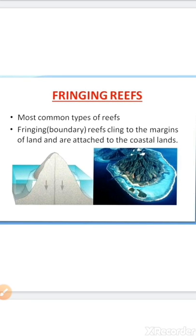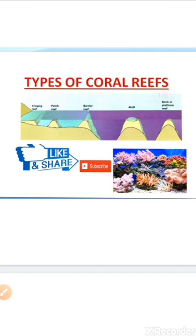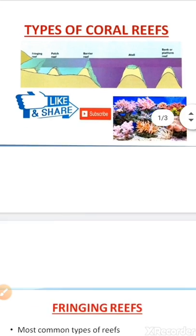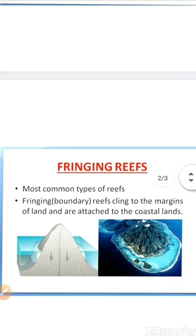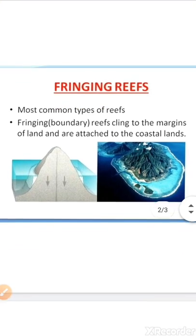In the types of coral reefs, there are three types we have studied: the fringing reef, barrier reef, and atoll. Out of those, we will talk today in this video about fringing reef in more detail.